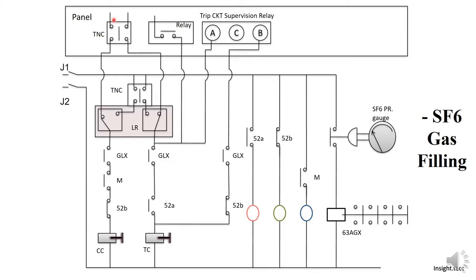The first circuit is our closing circuit. This is CC, which is the closing coil. Here is the GLX contact. If the spring charge contact is made, these two contacts are closed. 52B is the breaker auxiliary switch — if it is closed, then the breaker will operate.